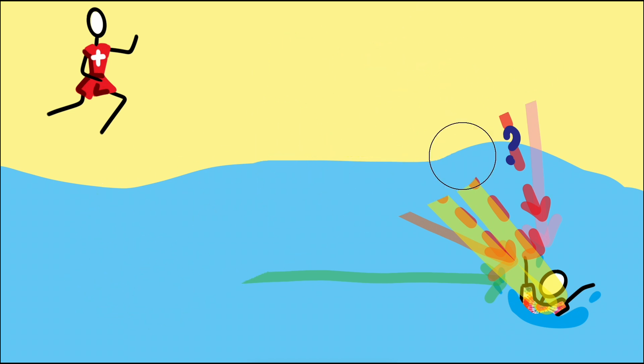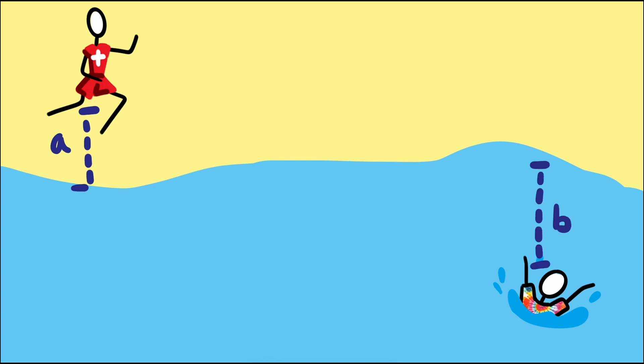Let's define some variables here to help us make sense of the situation. We'll call the distance from our lifeguard to the water A, and the distance from the swimmer to the shore B. Along the water line, the distance from the lifeguard to the swimmer C.